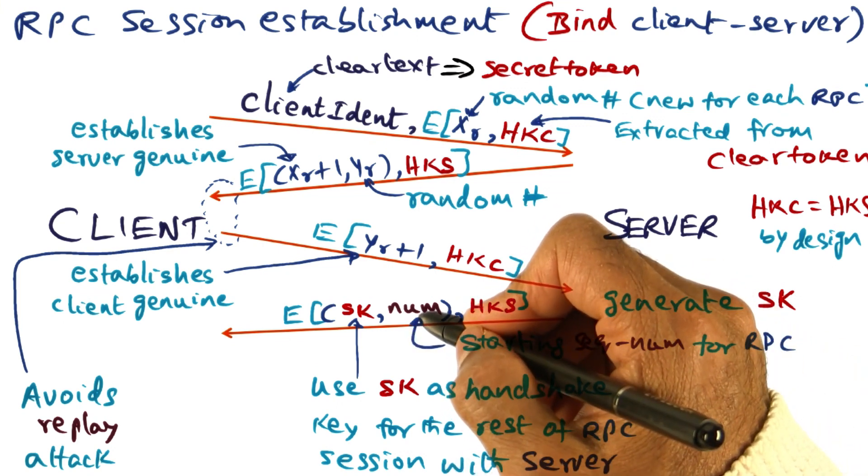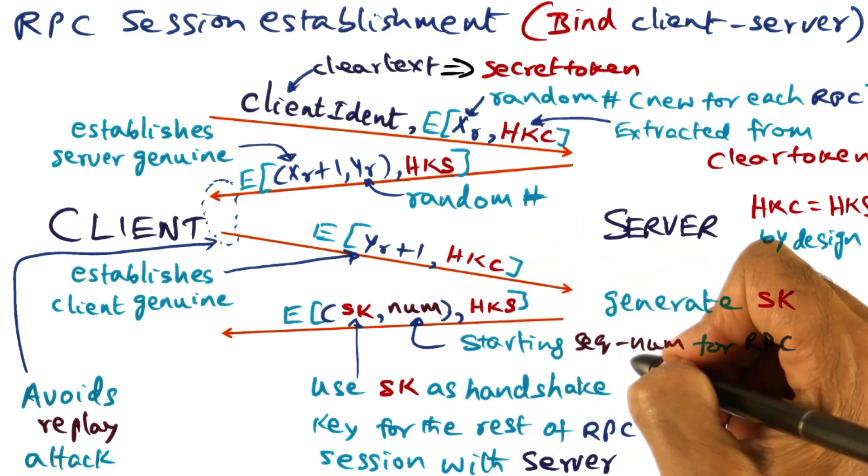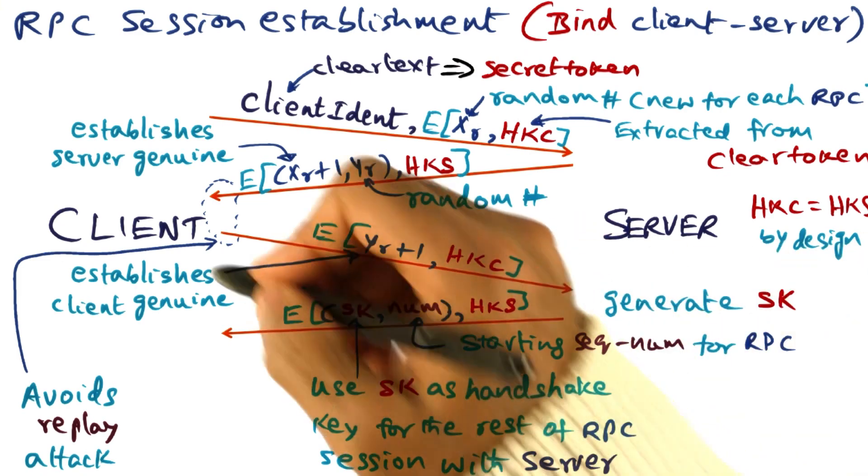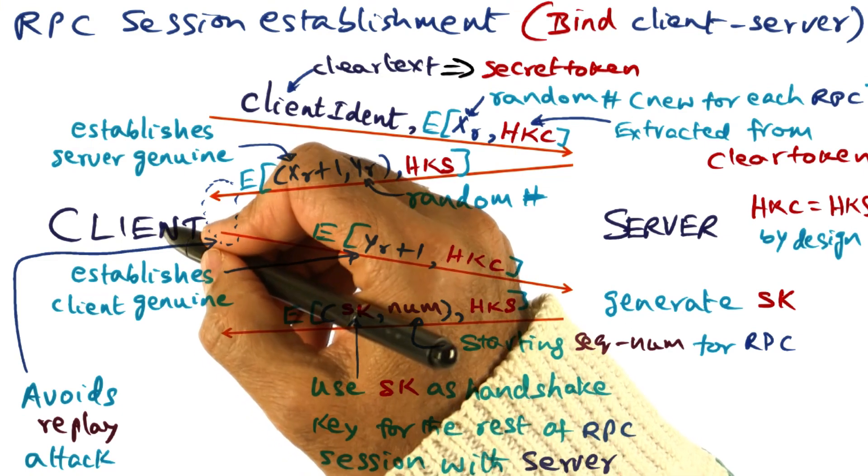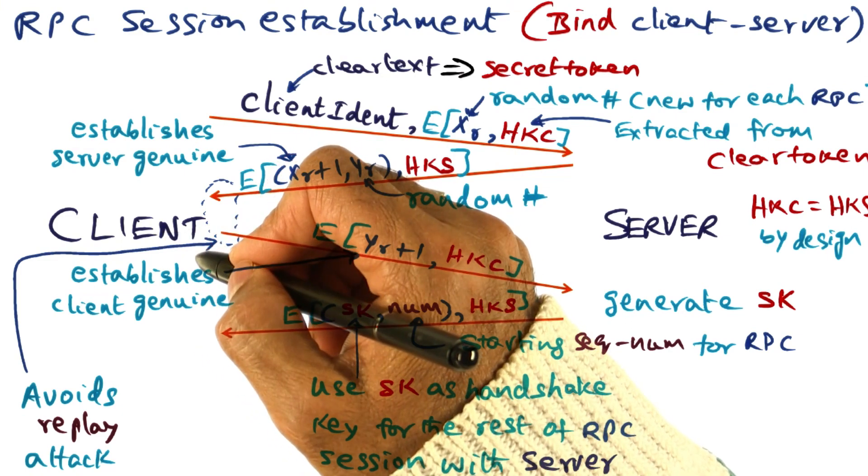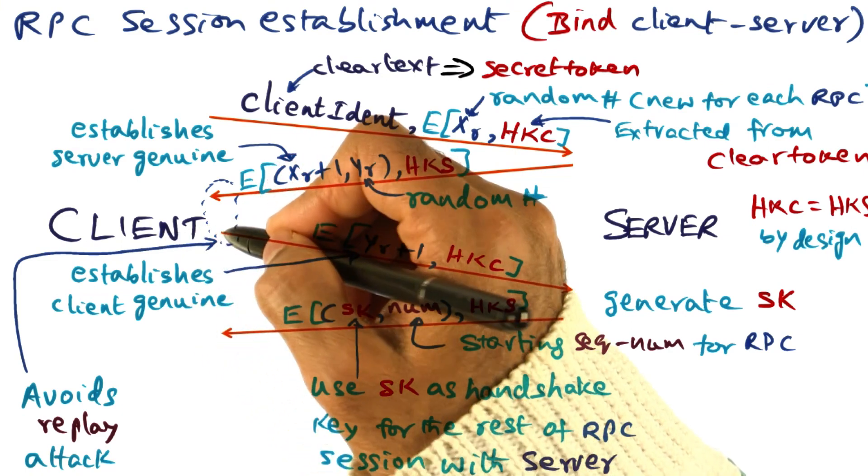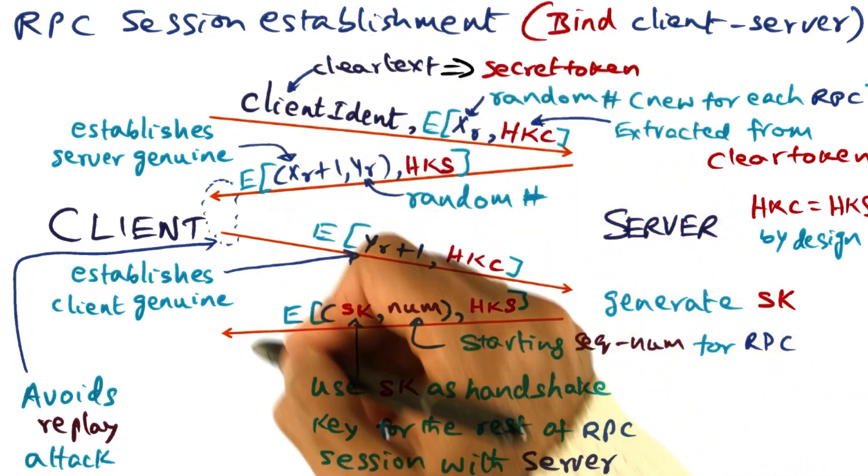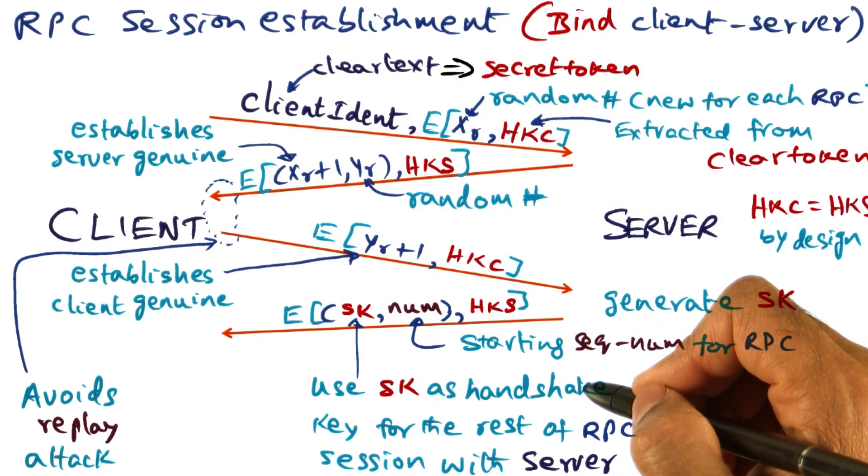So the second field, num, is the starting sequence number that Venus will use on behalf of the client for all the file system related RPC calls that are going to be made as part of this particular session. For this session, SK is going to be the handshake key.